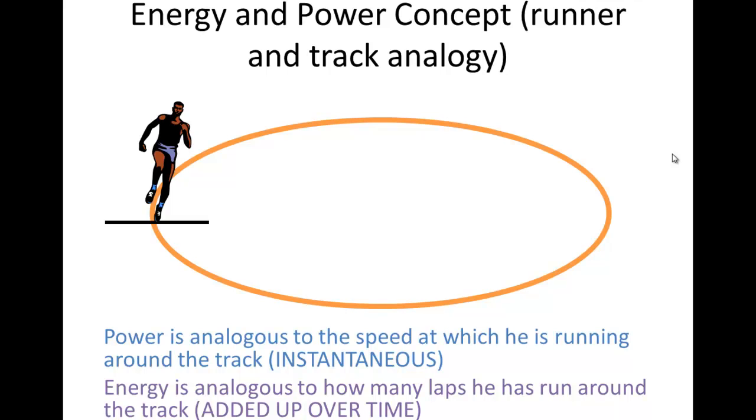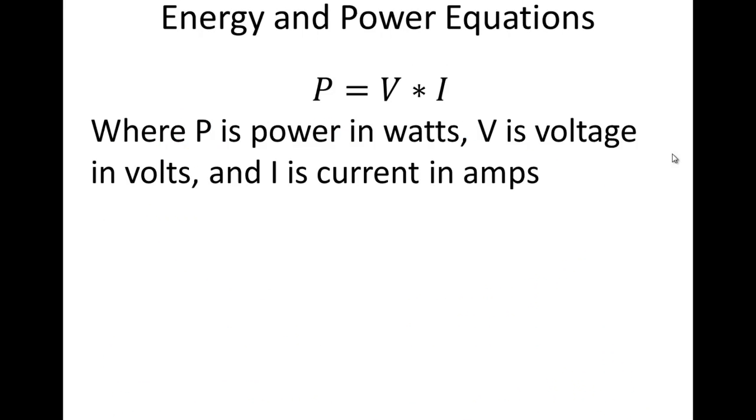Let's look at some equations for energy and power. If you have the voltage and the current in an electrical circuit, you can multiply those two to get power. There are lots of other ways to get power, but this is the one we'll focus on here. In this case, power is in watts, V is voltage in volts, and I is current in amps.